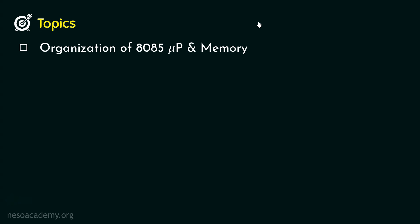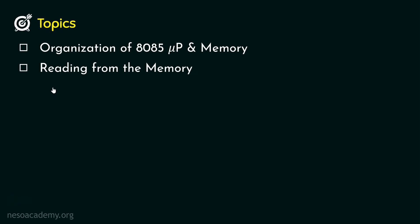The topics we are going to cover in this session: first, we are going to understand the complete organization of the 8085 microprocessor and the memory. The organization we have studied so far is actually incomplete. In order to provide data transfer in true sense, we need to understand the complete organization. Once we have done that, we will learn reading from the memory — how the 8085 microprocessor is going to read data from the memory.